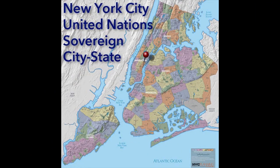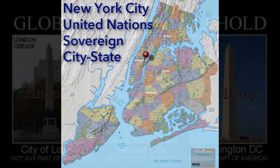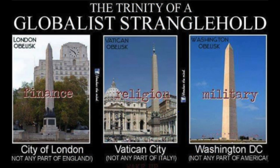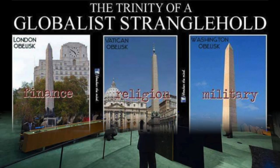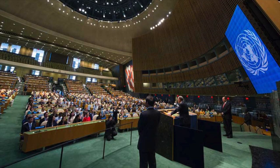The power of the U.N. over the United States is so vast that the United Nations has taken over all of New York City right beneath our noses. New York City is the fourth sovereign city-state besides the Vatican City, City of London, and City of Washington, D.C., District of Columbia. New York City, United Nations, is the franchisor of member nation corporations, and all things legal.